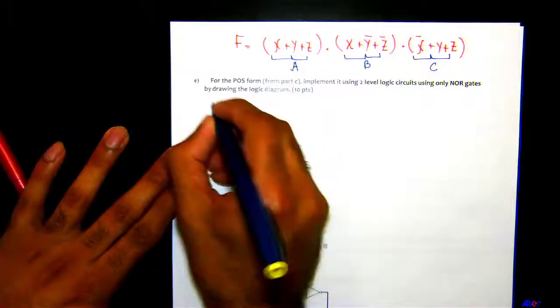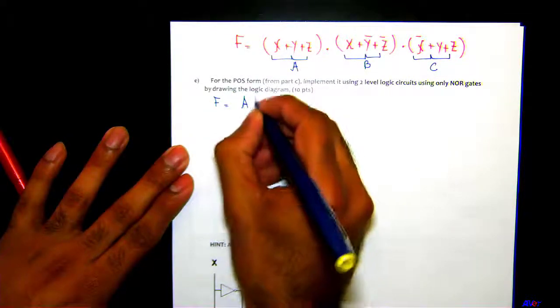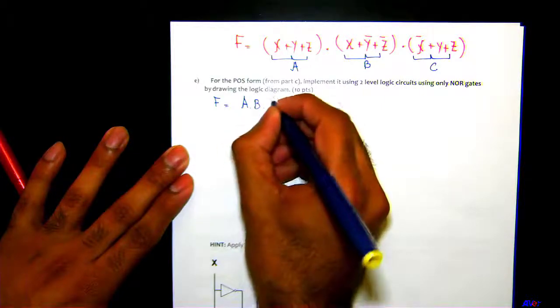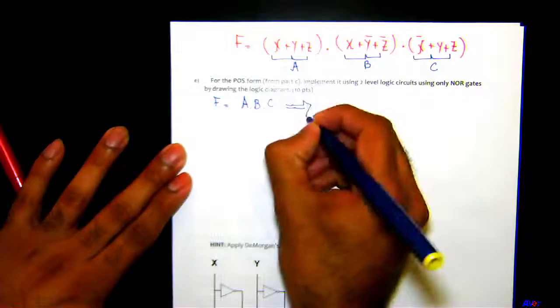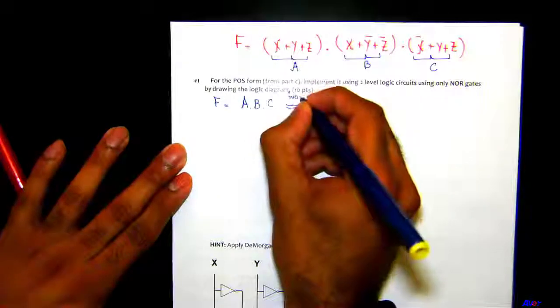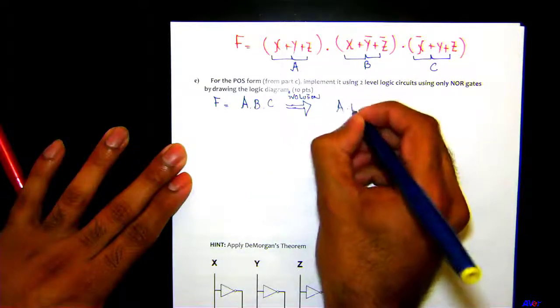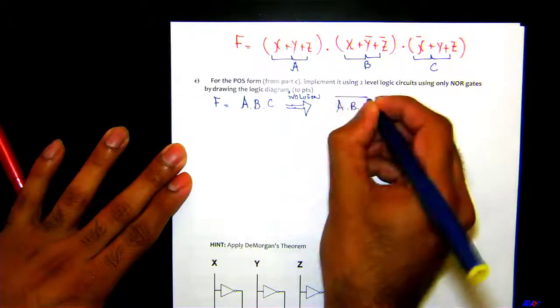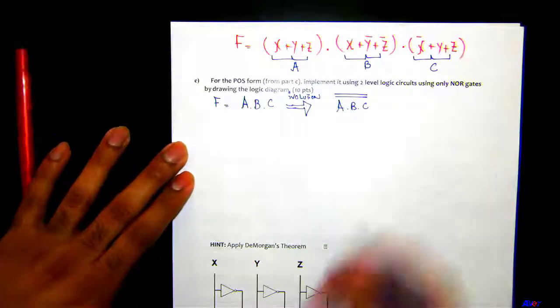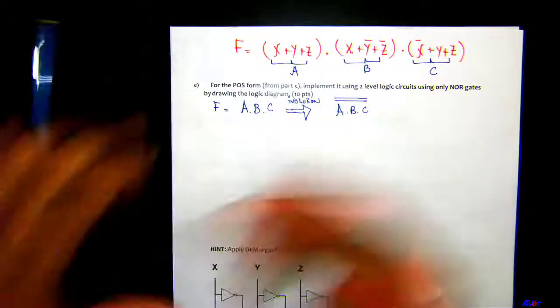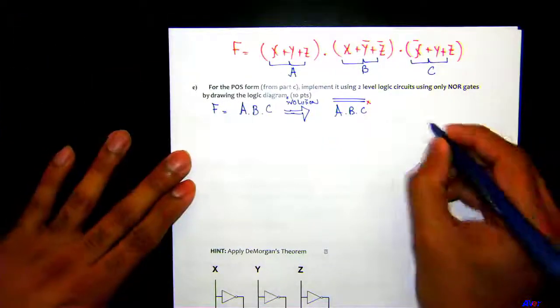So I can actually write down F = A·B·C. If I apply the involution here and involution here principle—anybody remember what involution principle does? I can actually write it down as A̅̅·B̅̅·C̅̅, and then these two bars we know would cancel out each other, right? Now I can cancel one of the bars and keep the top one by applying DeMorgan's.